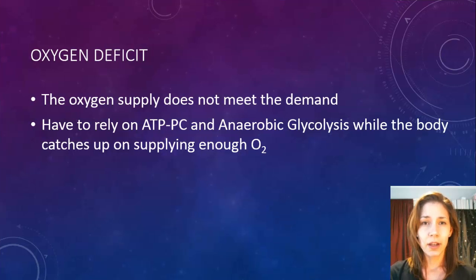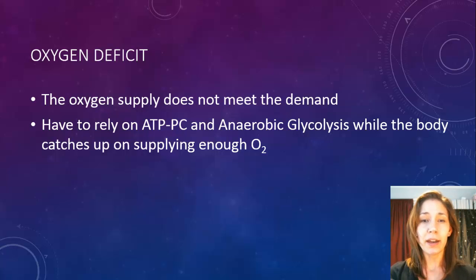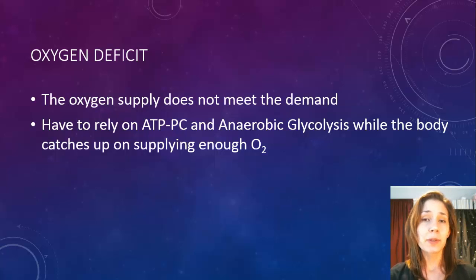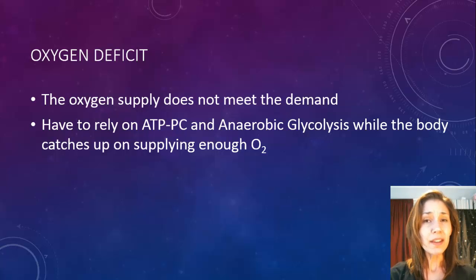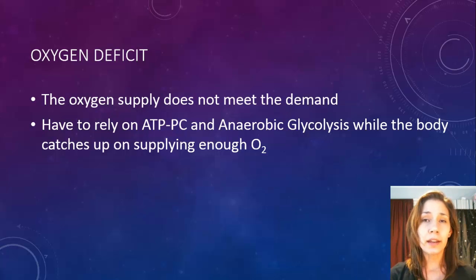First of all, oxygen deficit. Oxygen deficit is the amount of oxygen that your body requires but you're not quite getting enough. It's a case where oxygen supply doesn't meet the demand. Your body requires a certain amount, but your lungs, heart, and muscles haven't caught up yet, so they aren't supplying enough oxygen. That's why you have to rely on the ATP-PC and anaerobic glycolysis systems. This is a state of deficit — you don't have enough oxygen to kick in and start working aerobically.